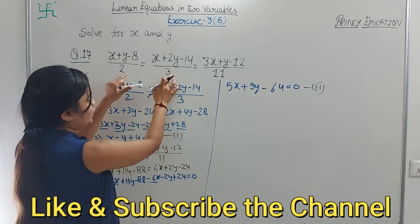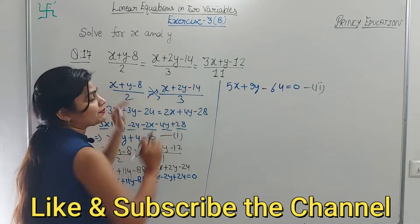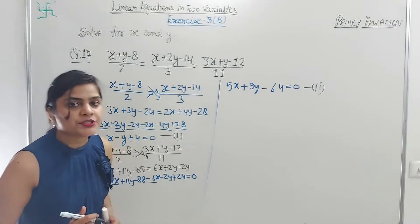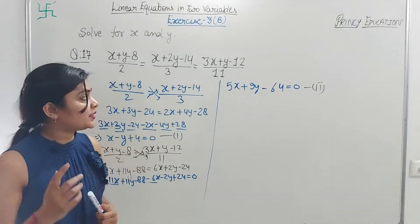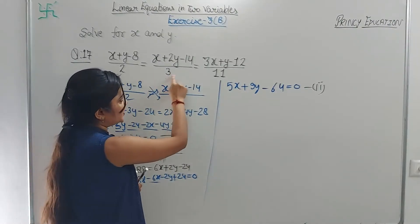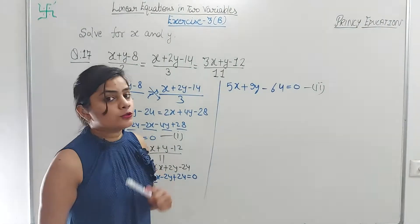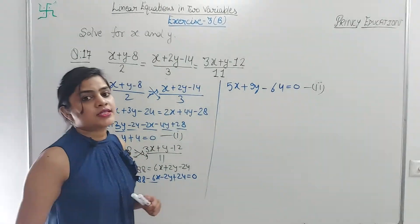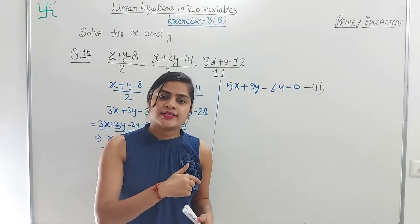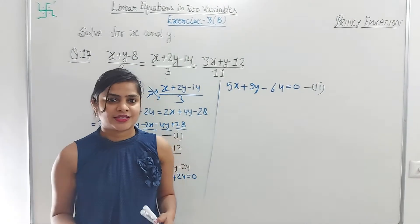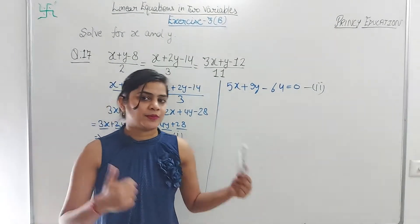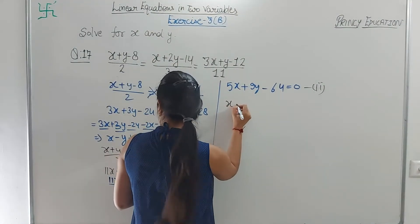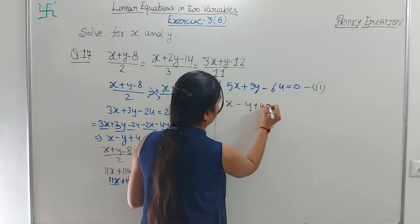So what we did was: first we set the first and second expressions equal, then the first and third equal. You could also set the second and third equal to find another equation — we did the same in question 16. Many students comment asking about using first and third. I'm showing you the same way — both give the same result. Now solve the equations: x - y + 4 = 0, and 5x + 9y - 64 = 0.